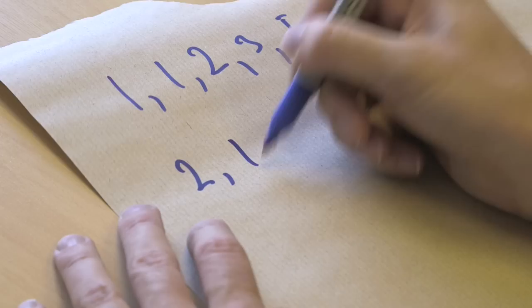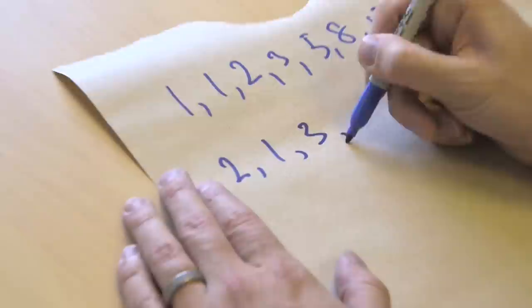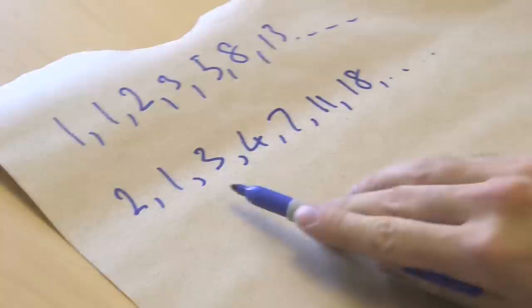Lucas numbers, you start 2, 1. So you just swap them around, and then you repeat exactly the same pattern, so 2 plus 1 then gives us 3, and then we get 4, and then you get 7, then you get 11 and 18, and these are the Lucas numbers.